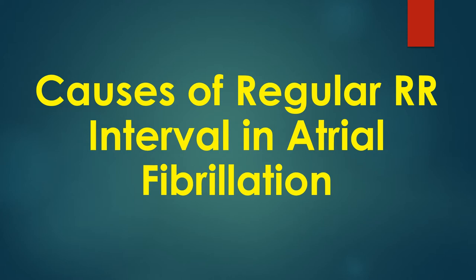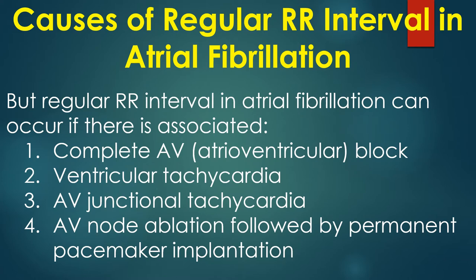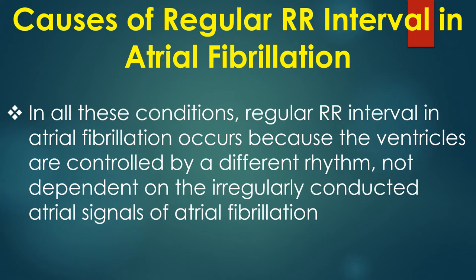Discussion on causes of regular RR interval in atrial fibrillation. ECG in atrial fibrillation is characterized by absent P waves, presence of fibrillary waves or F waves, and a totally irregular RR interval. But regular RR interval in atrial fibrillation can occur if there is: 1) complete AV block, 2) ventricular tachycardia, 3) AV junctional tachycardia, or 4) AV nodal ablation followed by permanent pacemaker implantation.